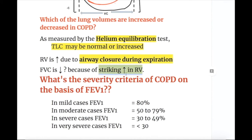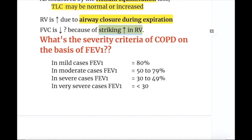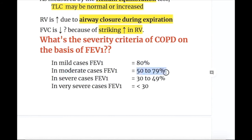The severity criteria of COPD based on FEV1 are: mild — FEV1 ≥80%; moderate — FEV1 50–79%; severe — FEV1 30–49%; and very severe — FEV1 less than 30%.